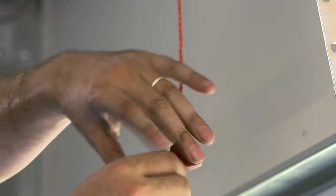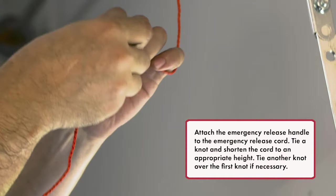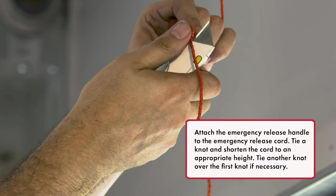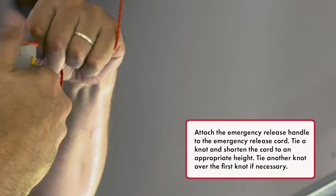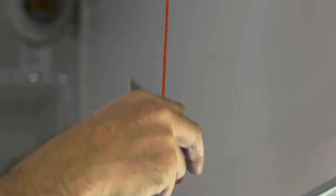Attach the emergency release handle to the emergency release cord. Tie a knot and shorten the cord to an appropriate height. Tie another knot over the first knot if necessary.